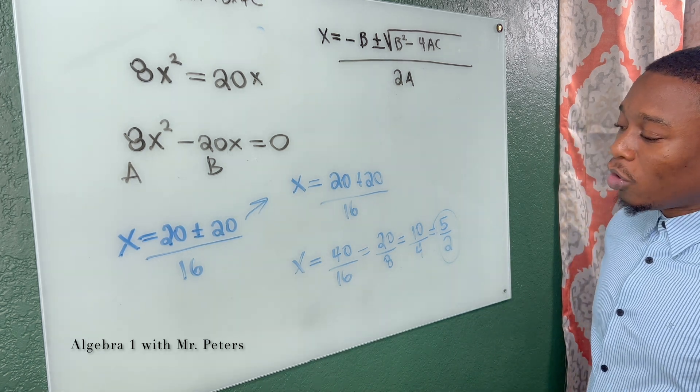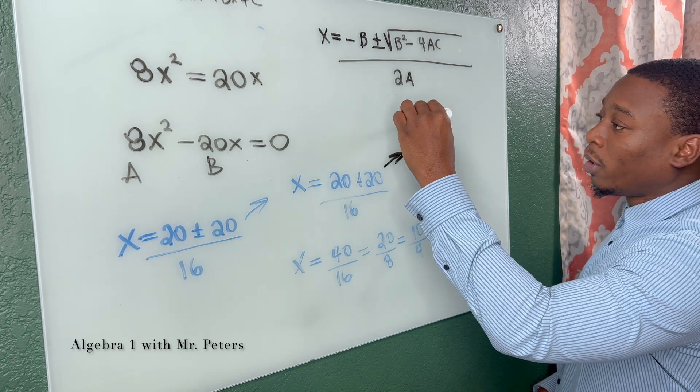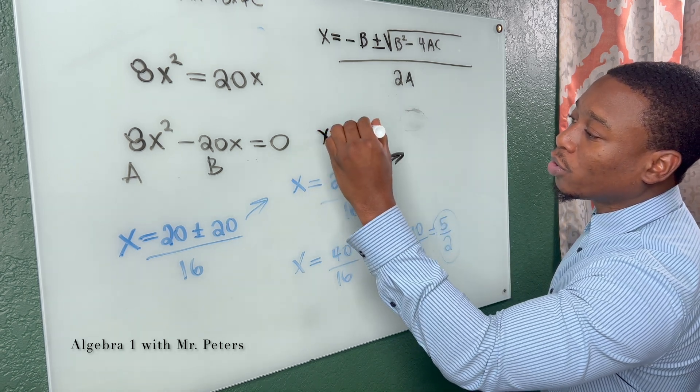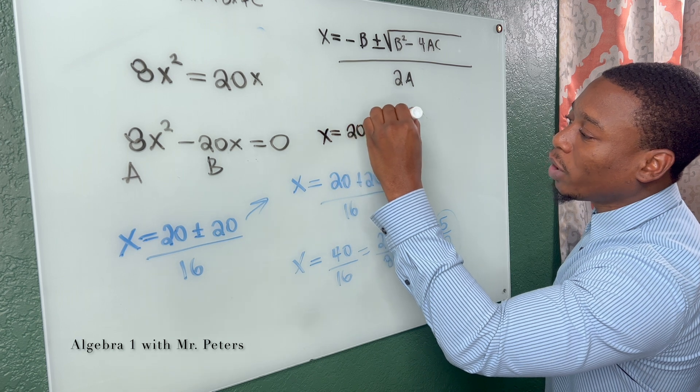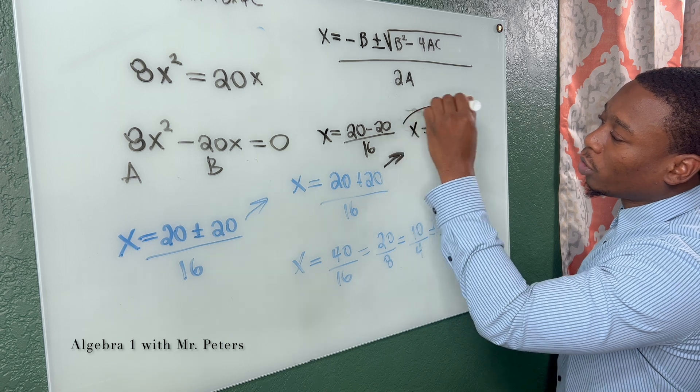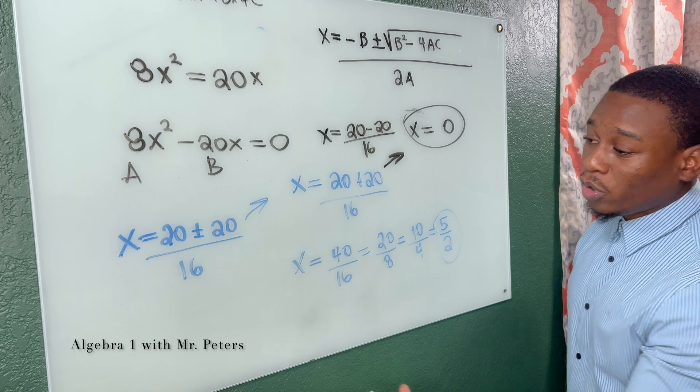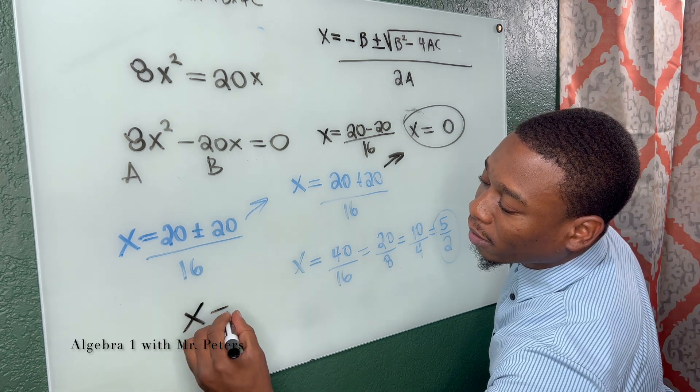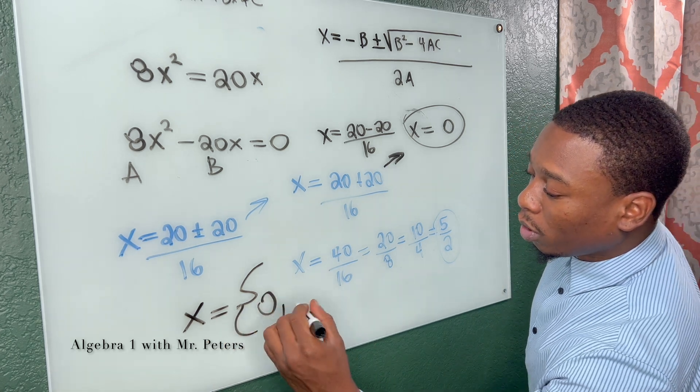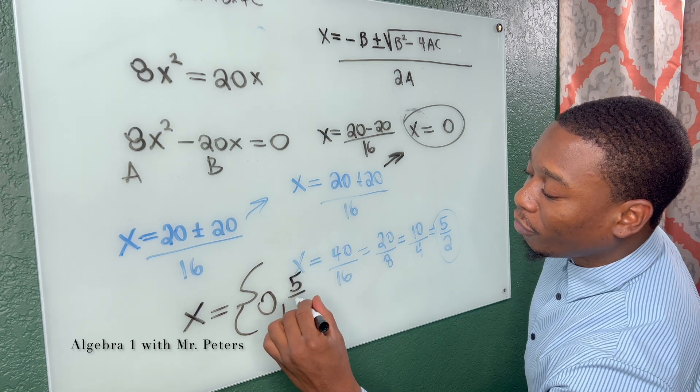Then we go back, we do the second equation. So the second equation we're going to do, x is equal to 20 minus 20 over 16. So we'll say x is equal to zero. Now on the test or the exam, you're going to see this expressed as a solution set that will look something like this: x is equal to, and then in braces, we have zero comma five over two.